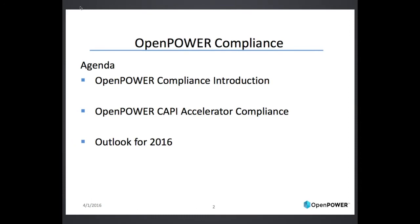Let's look at the agenda for today. First, I will give an introduction to Open Power Compliance with a review of the Open Power Architecture Compliance definition, which I described in more detail at last year's Open Power Summit. Next, I will describe Open Power CAPI Accelerator Compliance. The Compliance Work Group has generated an Open Power CAPI Accelerator Compliance Test Harness and Test Suite specification that will be going through public reviews soon. Today, I will describe the concepts from that document. Lastly, I will wrap up with an outlook of the Compliance Work Group activities for 2016.